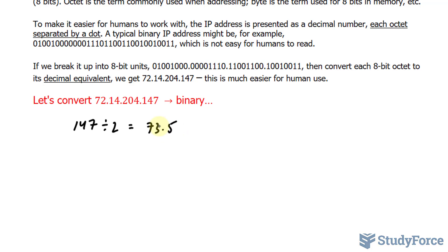Now since there is a decimal number, we assume that there's a remainder, and if there's a remainder, we will read this as 1.